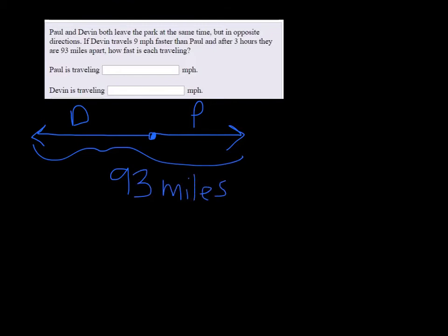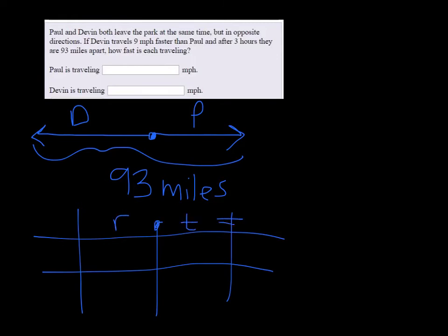What I need is Devin's distance plus Paul's distance and that will equal 93 miles. Let's draw the distance chart. R times T is equal to D and we have Paul and we have Devin to compare to.